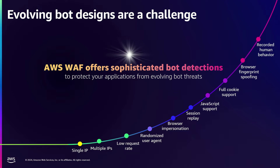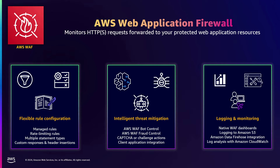AWS WAF is our web application firewall. It monitors HTTP/S requests and protects your application from commonly occurring web threats. It lets you control access to your website by defining rules, and you can define a desired rule action like allow, block, or count, or use some of our advanced mitigation rules as well. The product offers flexible rule configuration with managed rules, rate limiting, and support for multiple statement types. Customers also love the variety of native logging and monitoring options the service offers.